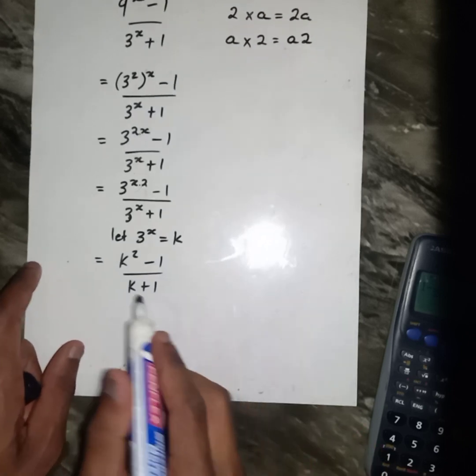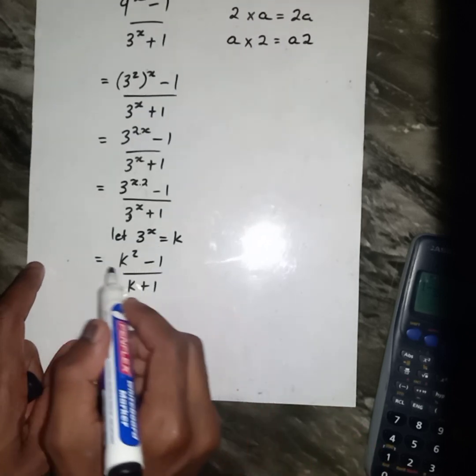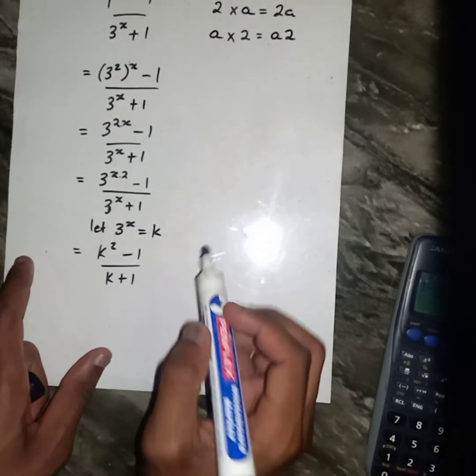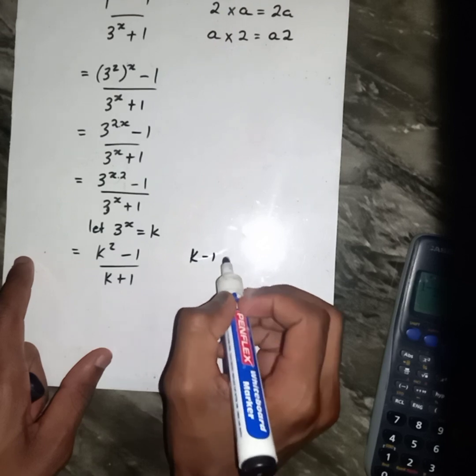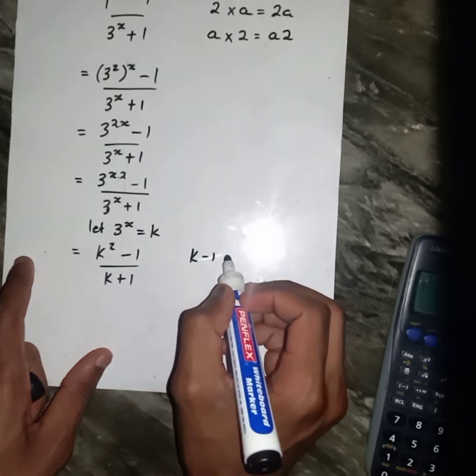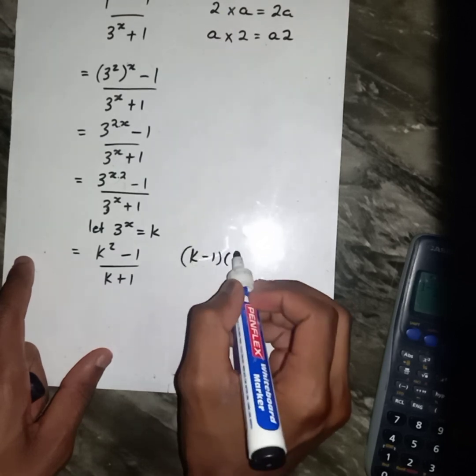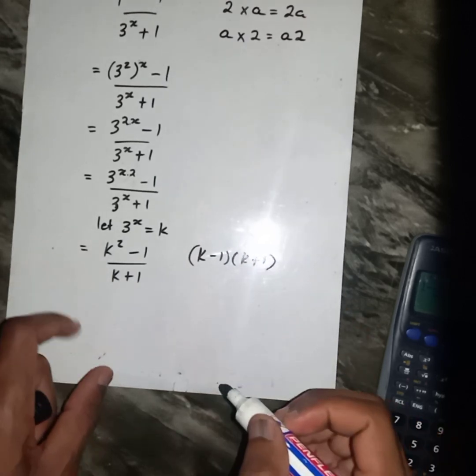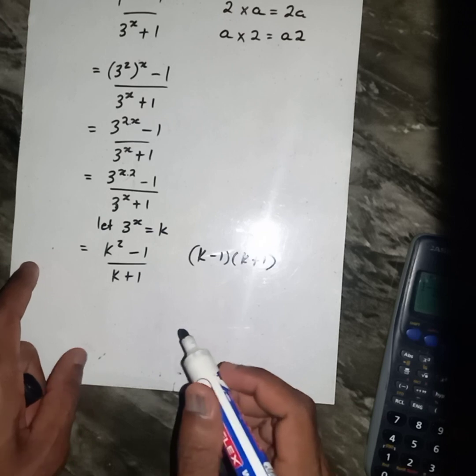At this point, check on our numerator. Do you still remember the difference of two squared? Like now, k minus 1 with k plus 1. This is a difference of two squared.